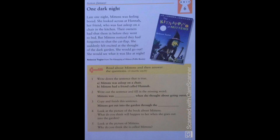Question number 4: Look at the picture of the book about Nitens. What do you think will happen to her when she goes out in the garden? Here, you have to use your own imagination. You can write anything that would happen to her. I'll just give my own example: I think Nitens will be kidnapped by a witch.